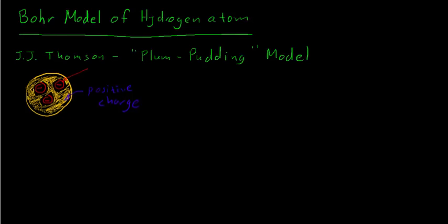Being the good Englishman that he was, he likened it unto a famous English dessert, something called plum pudding, which isn't actually pudding at all. It's kind of a cake, but it's filled with little bits of fruit. He imagined that the electrons were kind of like the little bits of fruit, and that the positive charge was kind of like the cake that enveloped the whole atom.